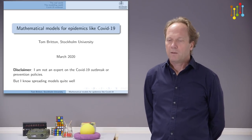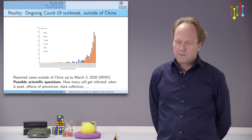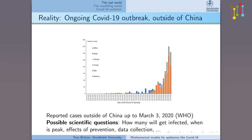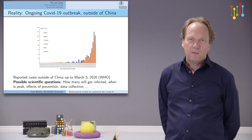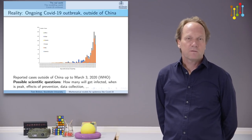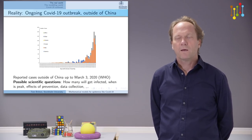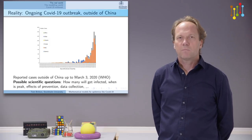Before I talk about mathematical modeling, let's talk a little bit about reality. Here we see the number of reported cases of the corona outbreak outside of China, going up until March 3rd, 2020. Looking at a curve like this, one might ask: how many will get infected — the $10,000 question right now. Another is when and how big will the peak be, important for public health. Also, what happens if we insert preventive measures, and what type of data should we collect to make our statements more precise?